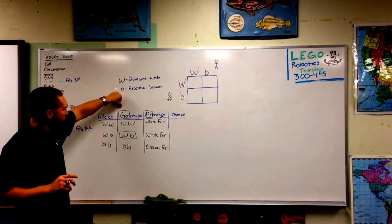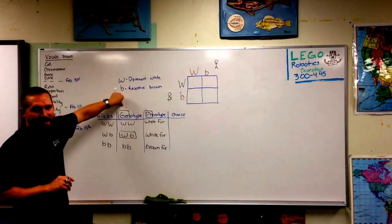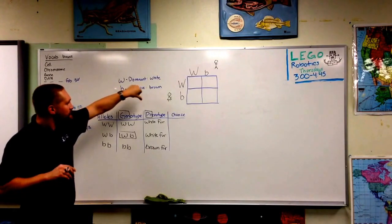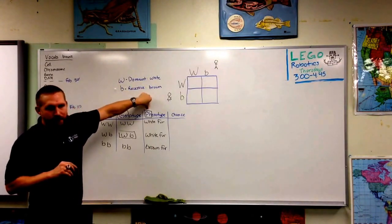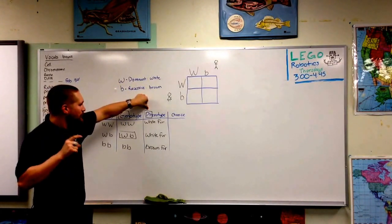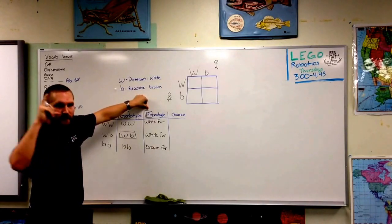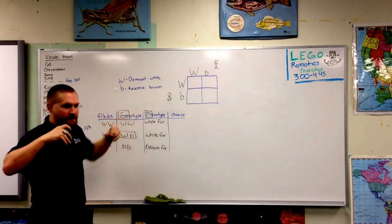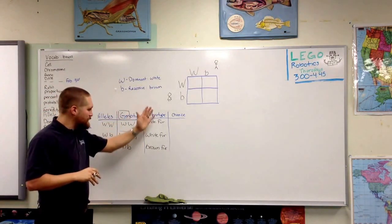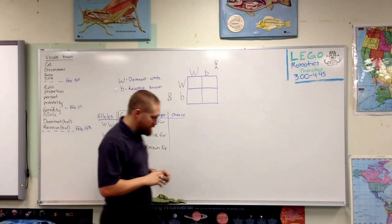Genotype is the genes that something has — the genetic makeup. Phenotype — pheno, photo — if I took a photo of this thing, what would I see? This is what we see because of the genes.